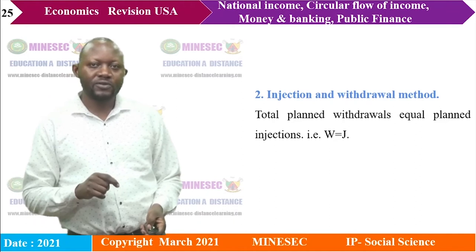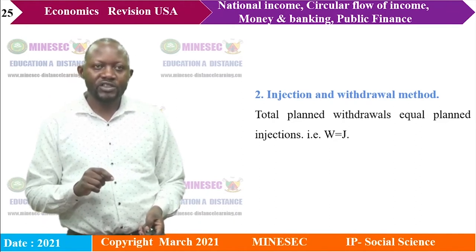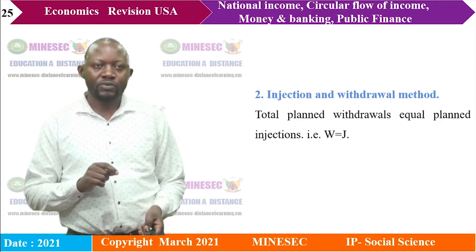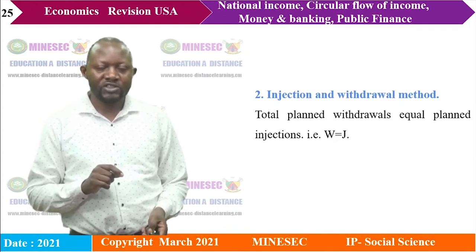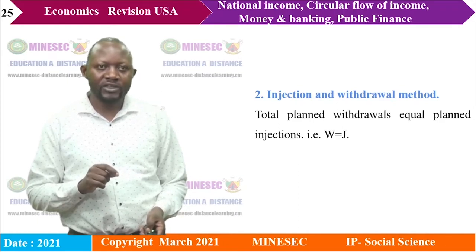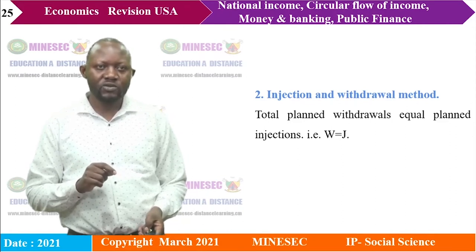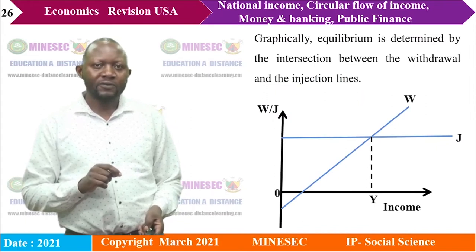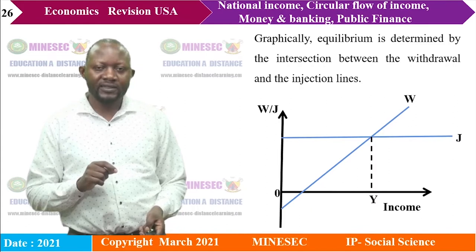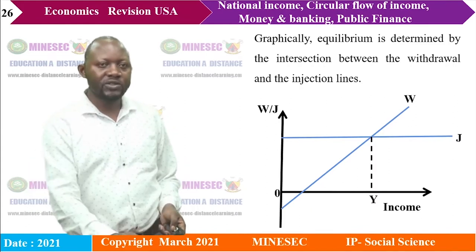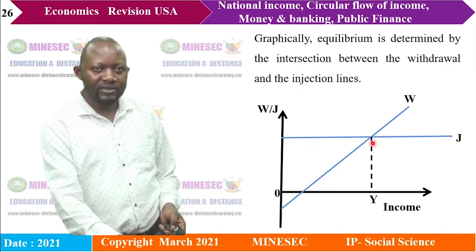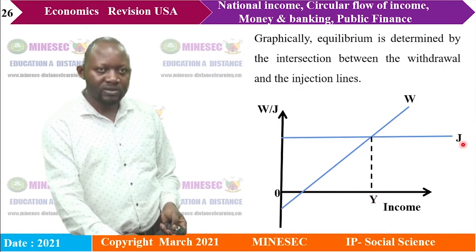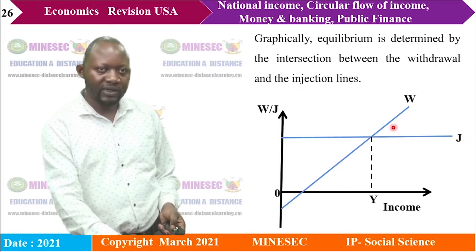The second approach is the injection and withdrawal method. Equilibrium occurs where total withdrawals (W) equal total injections (J). Graphically, equilibrium is determined by the intersection between the withdrawal and injection lines. Withdrawals are also known as leakages. In the two-sector frugal economy, equilibrium occurs where savings equal investment (S = I). In the three-sector economy, equilibrium is where S + T = I + G. In the four-sector economy, equilibrium includes exports: S + T + M = I + G + X.